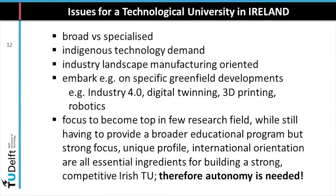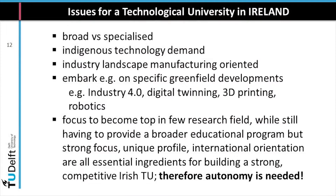There is an industry landscape devoted to manufacturing and manufacturing-oriented activities, and for example Industry 4.0, digital twinning, 3D printing, and robotics could be emerging areas — and I think it's still time to embark on those fields if you make choices. But the most important thing is to focus, if you want to become a top university in a few research fields. A few is not three, but definitely not trying to cover the entire spectrum.